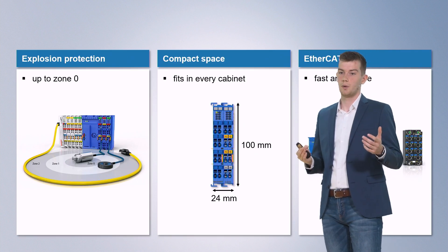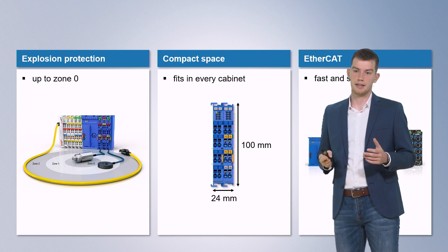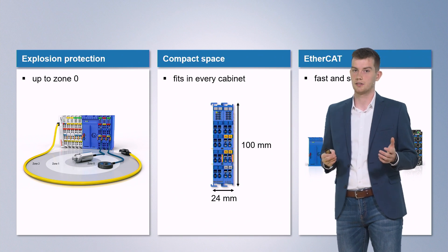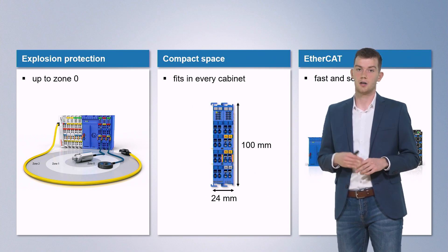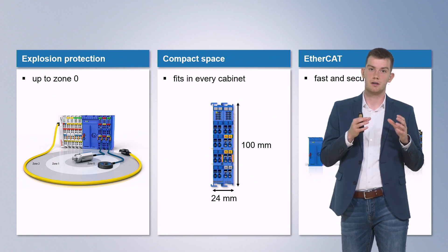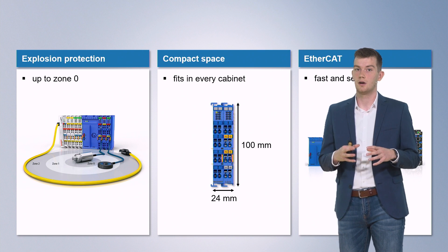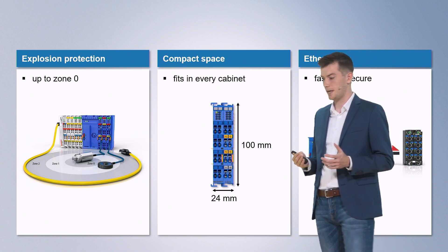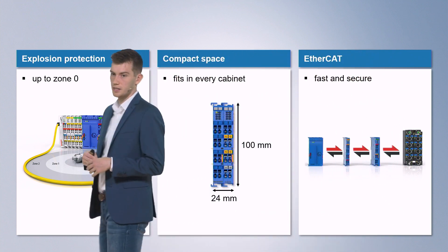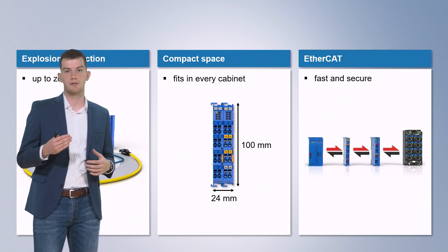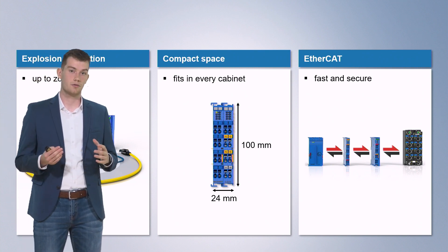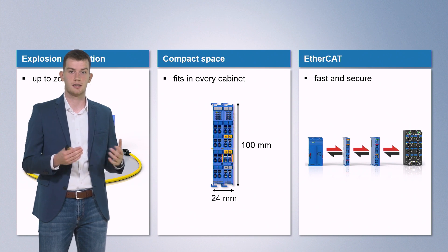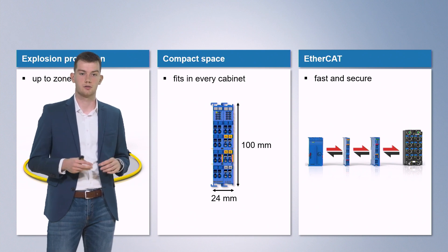What else do we have in terms of benefits? We are compliant to the 2Y standard and can therefore connect to field devices from Zone 0 of the hazardous areas. We are really compact, which means we can be flexibly mounted inside an existing cabinet or used for test setups, for example. And because of EtherCAT in the backbone, we have a much smaller process image of all the data, resulting in faster communication speed. Of course, because of the PROFINET controller inside the terminal, we can also run security functions directly on the terminal.